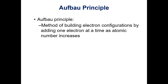In this video, we're going to talk about electron configurations and learn how to write them. The Aufbau principle is a method of building electron configurations by adding electrons one at a time as the atomic number increases.